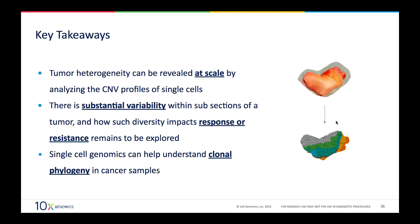The key takeaways from this experiment are that you can reveal tumor heterogeneity at scale — something not possible without single-cell-level genome analysis. You can uncover how much variability exists within subsections of the same tumor, and you can picture how, depending on which section is biopsied, you could get very different readouts. This can impact response to treatment or resistance. Furthermore, single-cell genomics enables understanding of clonal phylogeny within a tumor — something that would not be possible by sequencing tumors in bulk.